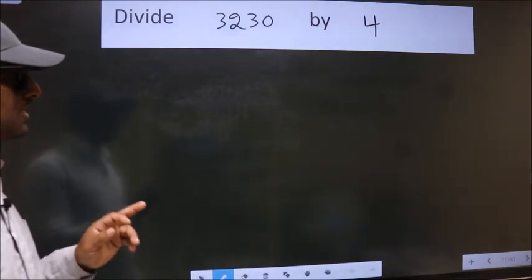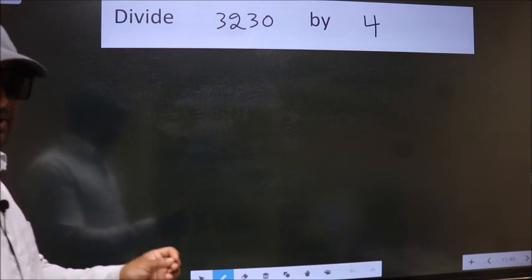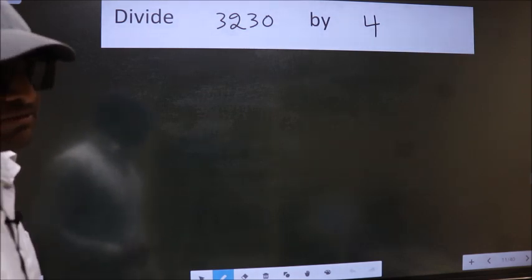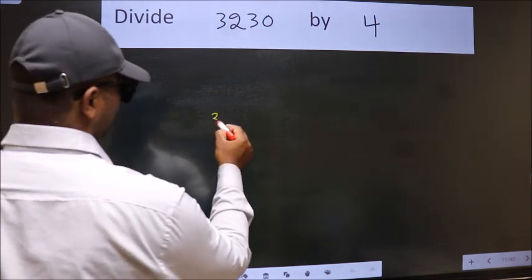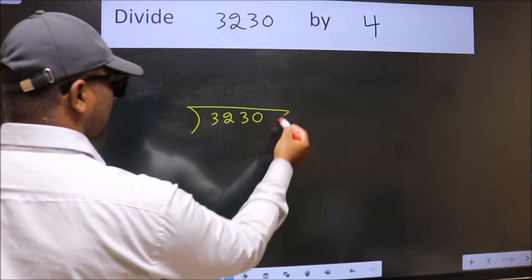Divide 3230 by 4. To do this division, we should frame it in this way: 3230 here, 4 here.